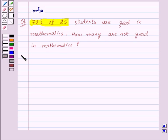Let's see its solution. In this question, we are given that the students good in mathematics are 72% of 25.